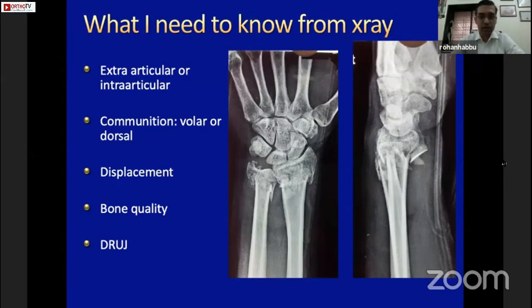Look at the quality of the bone and look at the DRUJ status. If you answer these questions well, you will know whether you want to fix it or whether you want to apply a plaster.